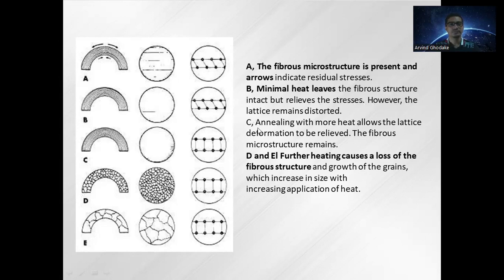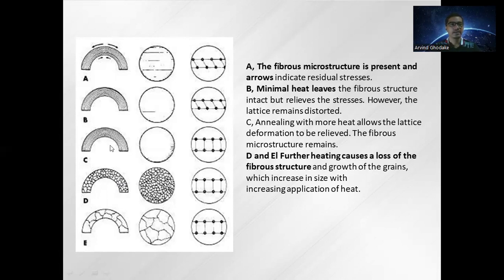With more heat in the third annealing stage, the lattice deformation is relieved and the fibrous microstructure remains. There is a definite arrangement of atoms, and refinement occurs through the annealing heat treatment process. Further heating in stages D and E causes loss of the fiber structure and grain growth, with grain size increasing with increasing heat application. A definite grain structure forms for the metal. So the stages go from initial stress, to stress removal, to grain arrangement, to final grain position.